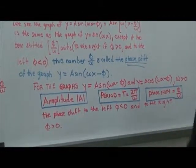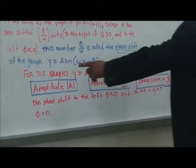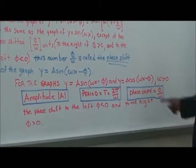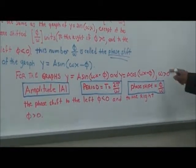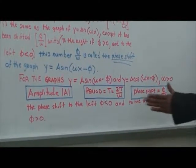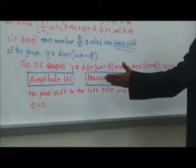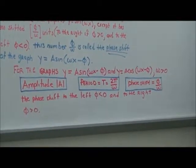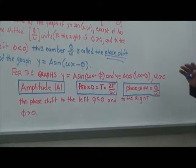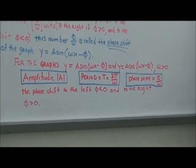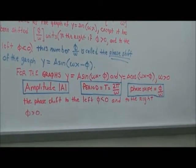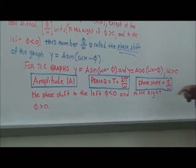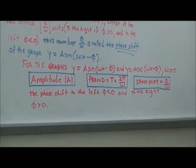The phase shift applies to y equals A·sine(ωx minus φ), and also to y equals A·cosine(ωx minus φ), where ω > 0. The amplitude is the absolute value of A, the period is T equals 2π/ω, and the phase shift is φ/ω — to the left when φ < 0, and to the right when φ > 0.